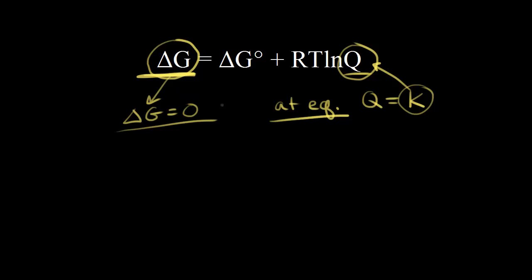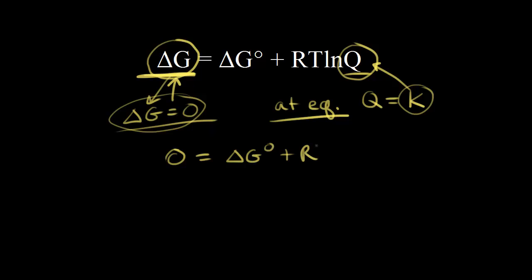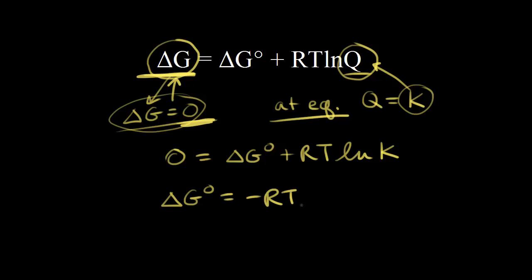There's no difference in free energy between the reactants and the products. Let's plug delta G equals zero into our top equation. So we have zero is equal to delta G zero, the standard change in free energy, plus R times T. Since we're at equilibrium, delta G equals zero, this would be the natural log of the equilibrium constant K. Solving for delta G zero: delta G zero is equal to negative RT natural log of K.